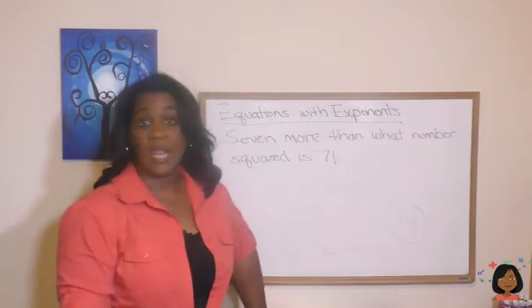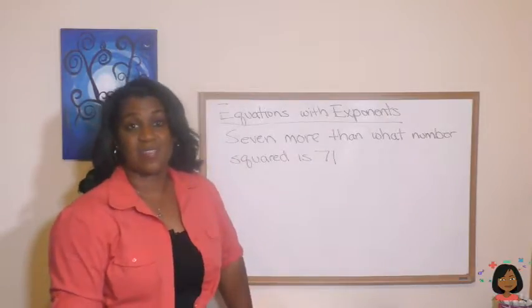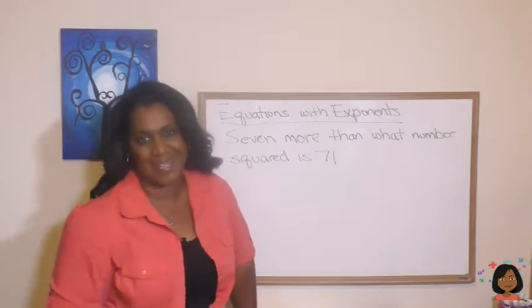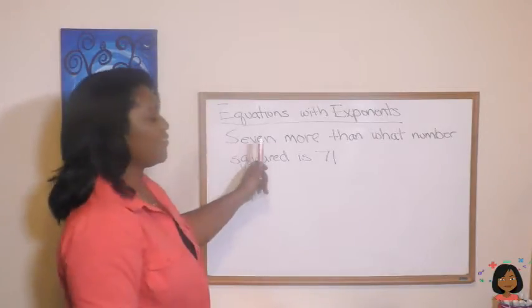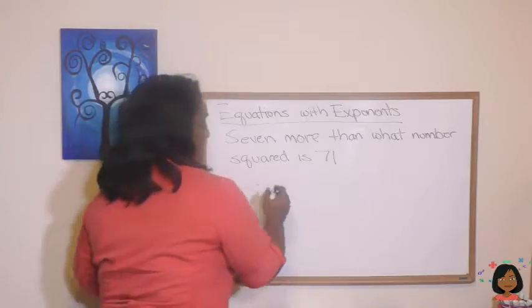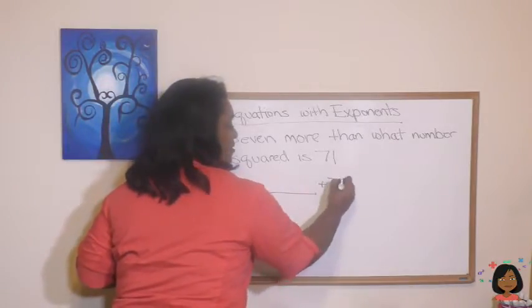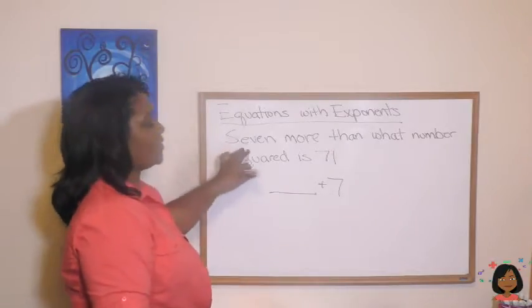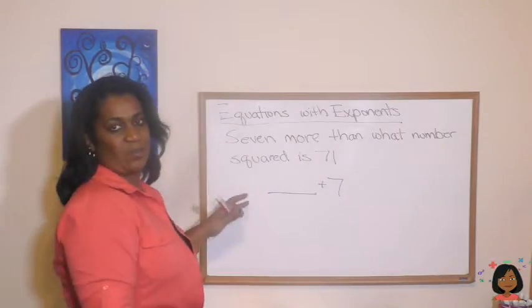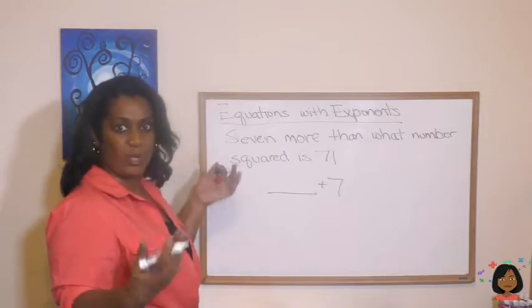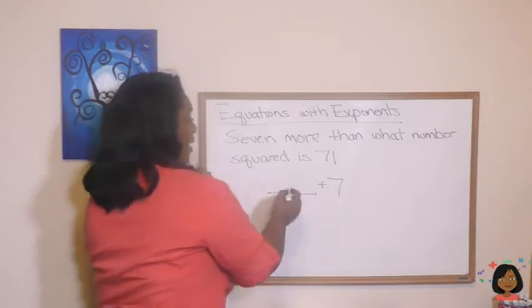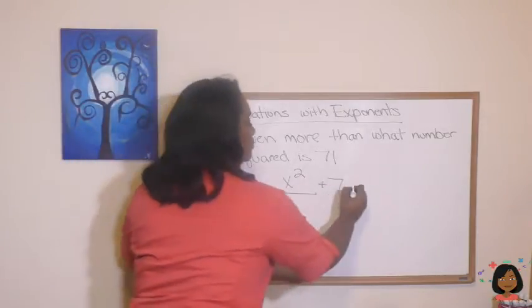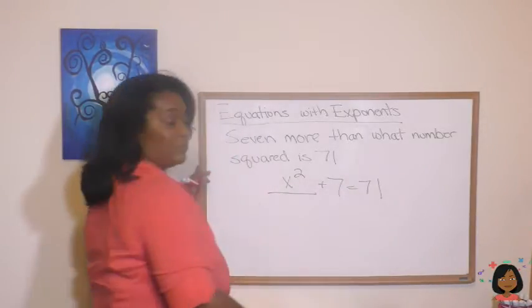Now what do we do when we have a problem written like this? Well, we have to translate it from our English language to our mathematical language. Let's do it. Seven more than, which means we know we're going to be adding seven more, plus seven to something. Let's figure out what that something is. Seven more than what number squared? When we say what number, we know that's x, so x squared is, means equal, 71.